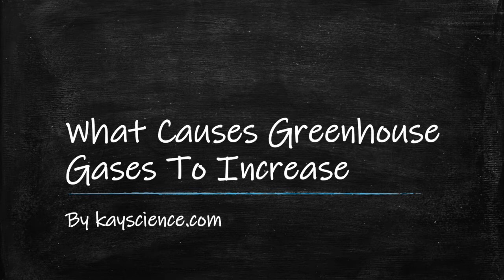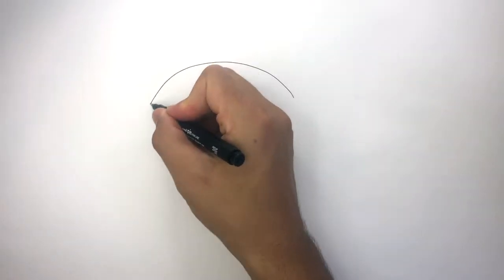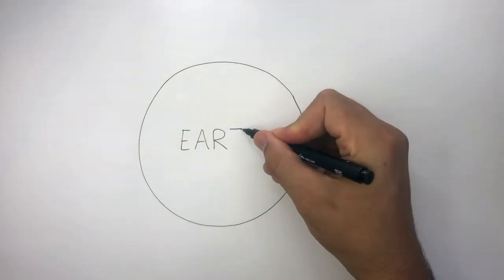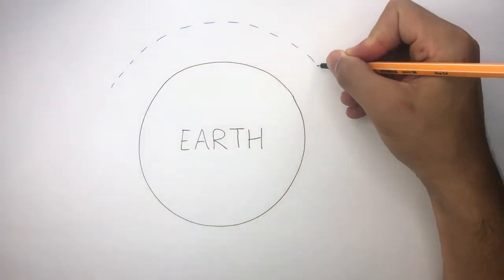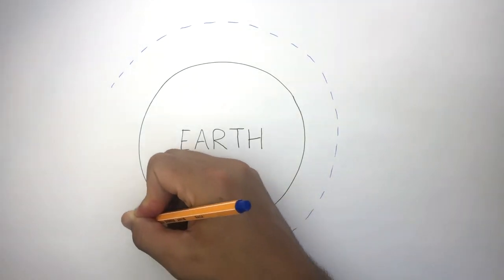What causes greenhouse gases to increase? By kscience.com. This represents a simple diagram of the Earth and this dashed line represents the upper limit of Earth's atmosphere.